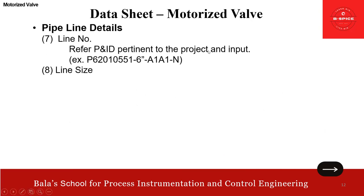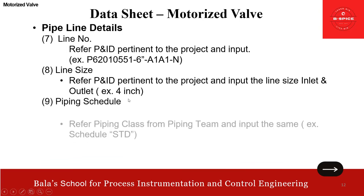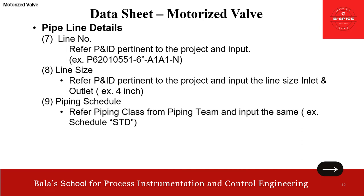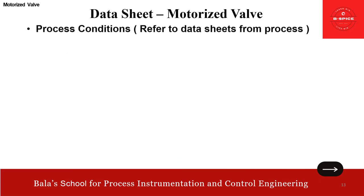For the pipeline section: line number P-6201-0551-6 inch A1A1 — this is piping material classification; refer the piping material class and input. Then line size — I put it as 4 inch. Refer the P&ID and input the line size. Inlet and outlet are both 4 inch. Then piping schedule — refer piping class from the piping team and input. Here in this case I put it as standard, it could be schedule 80 or schedule 40 depending on the piping class. Then piping material and insulation — refer to the piping class from the piping team. For example, carbon steel CS and steam trace if steam tracing requirement is there.